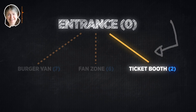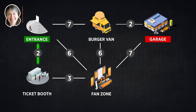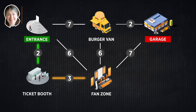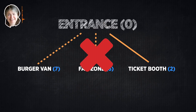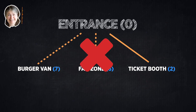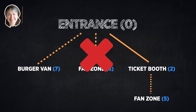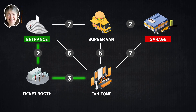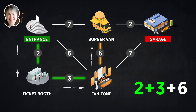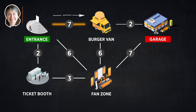Now look at paths that go through the ticket booths. You could reach the fan zone in 5 minutes — that's 2 to the ticket booths plus 3 from the ticket booths to the fan zone — which is faster than going directly from the entrance at 6. So cross off the direct link from entrance to fan zone, and put the fan zone under ticket booths with a dotted line at 5. The next smallest dotted line is the fan zone at 5. From the fan zone you can reach the burger van at a cost of 11, but there's already a better direct path from the entrance, so we ignore that.